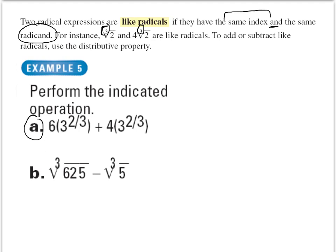For example A, this one is kind of similar to the factoring by grouping we did in the previous section. Since both of these terms are the same, what we can do is we can combine the 6 and the 4 and then we have our 3 to the 2 thirds out here. Final answer for here is 10 times 3 to the 2 thirds.